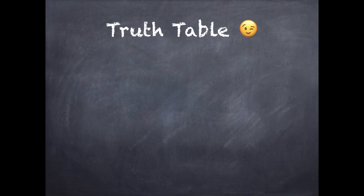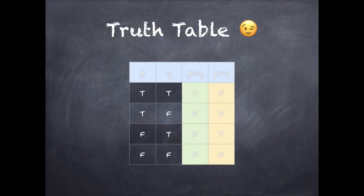Truth table. The truth table for p AND q and p OR q — that is conjunction and disjunction — is shown. The conjunction is only true when p and q both are true, and the disjunction is only false when both p and q are false.